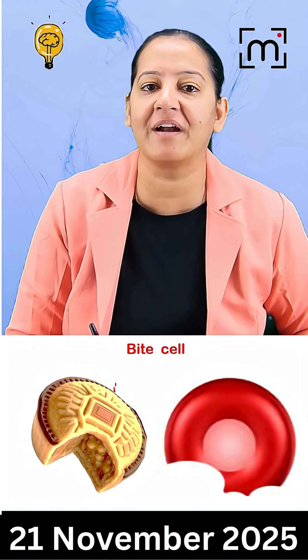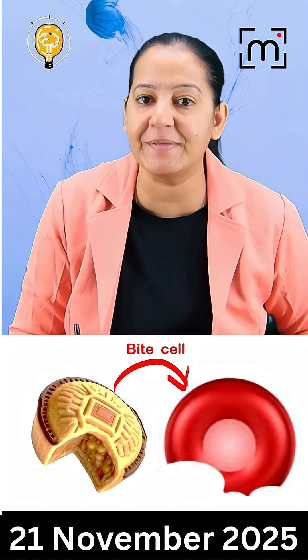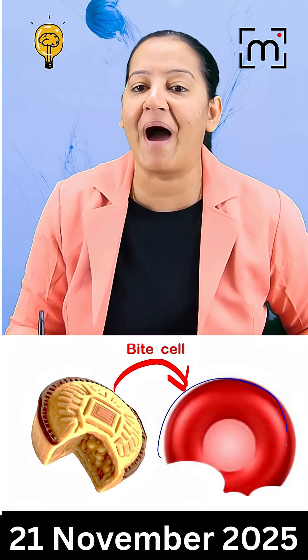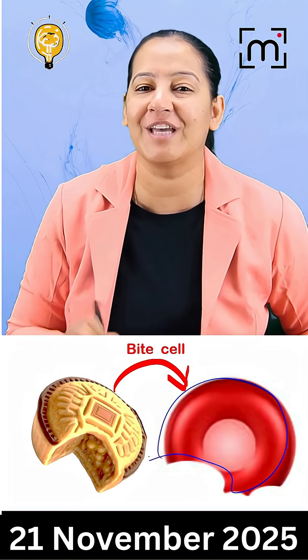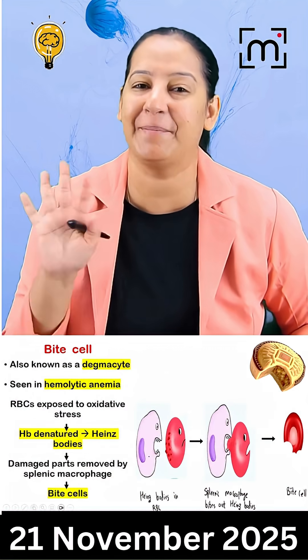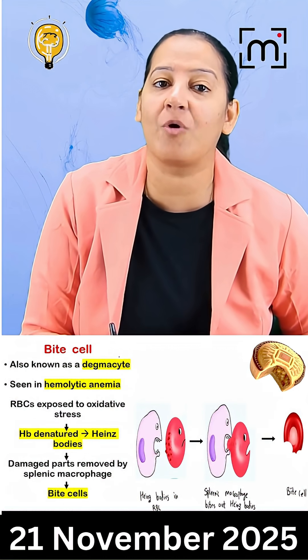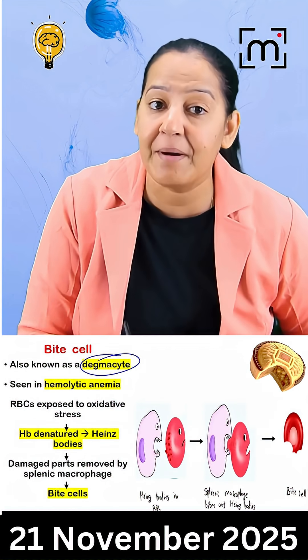Do you know a hematological condition in which the RBC is having this shape? It is known as bite shape RBC. Bite cells are also known as degma sites.